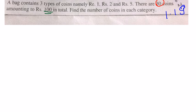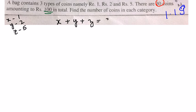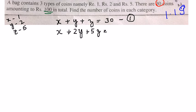To start with the solution, let us assume x is the number of 1 rupee coins, y is the number of 2 rupee coins, and z is the number of 5 rupee coins. So we write the first equation: x plus y plus z equals 30. The second equation is x plus 2y plus 5z equals 100.